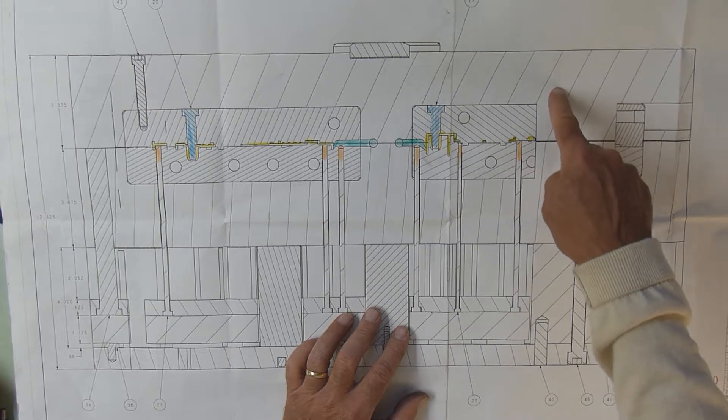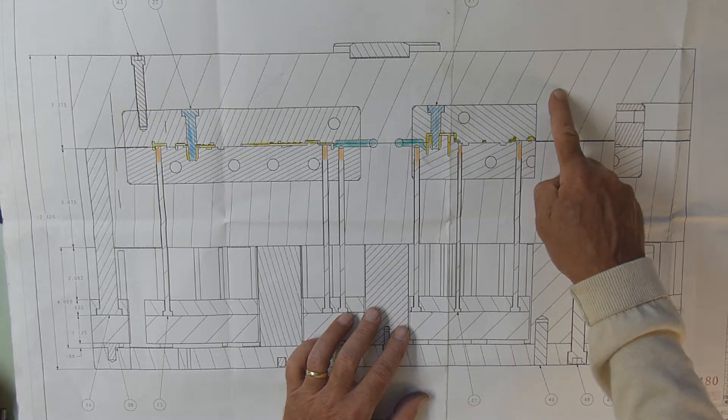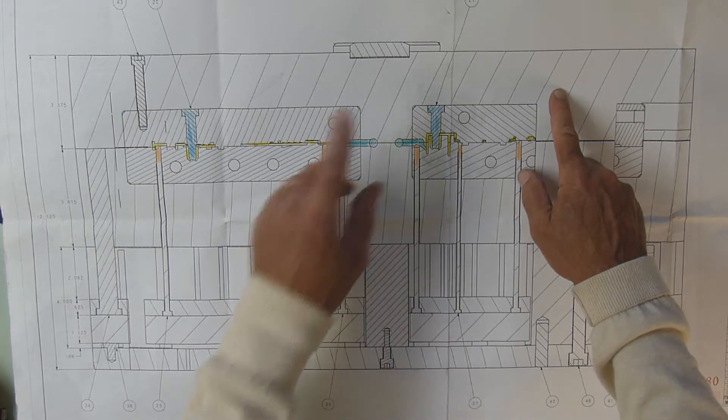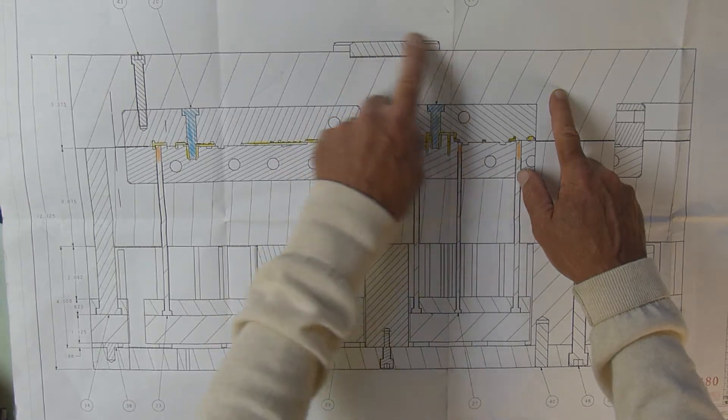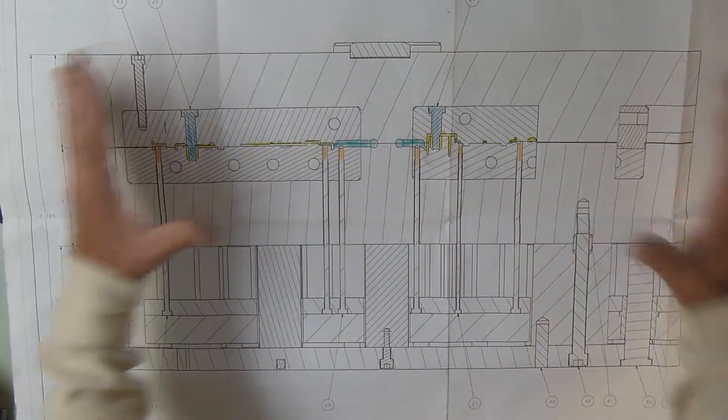We'll get into it, but this is a sprue bushing on the top, or a locating ring that locates the whole mold on the press. And then there is a sprue bushing.